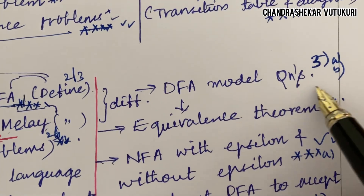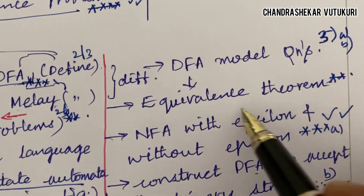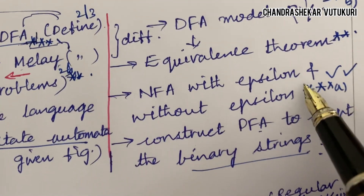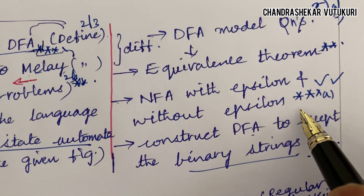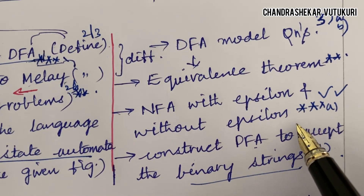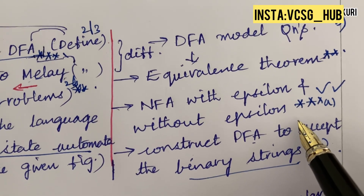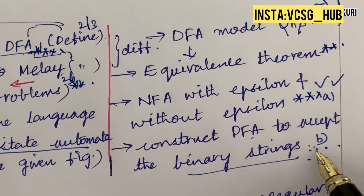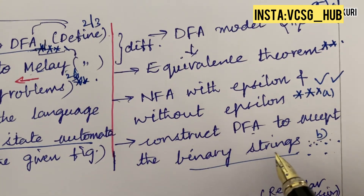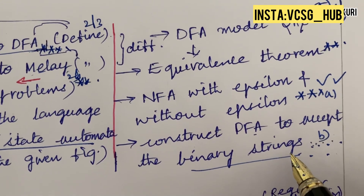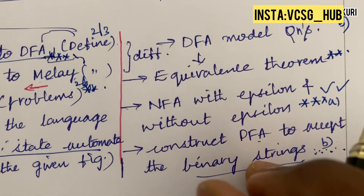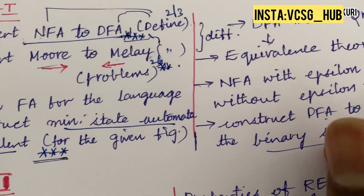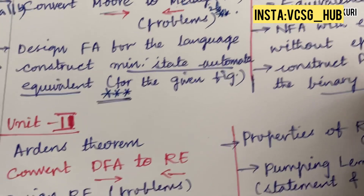DFA model equations may be a 3A question. NFA with epsilon and NFA without epsilon — the equivalence theorem — may be one of the topmost questions you are going to get as Q3B this time. Constructing a DFA to accept binary strings related to this concept may give you one more question — Q3A or Q3B. Make sure to work out each and every concept without neglecting any part in the course.